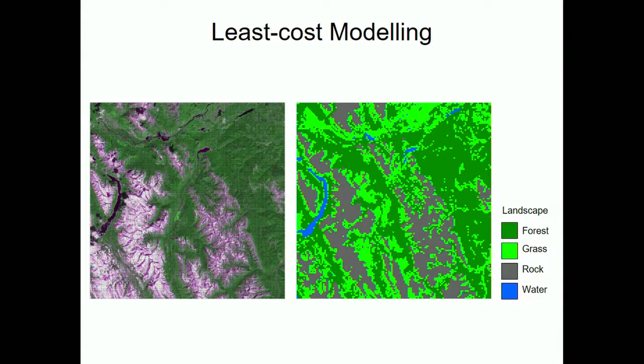We then decide how much it costs for movement across different landscape types. That cost could be a variety of things — the technique originated in transport geography where cost meant money — but in ecology we talk about ecological costs: energetic cost, calories burned, psychological aversion, or mortality cost — the possibility of being predated or killed — identifying which parts of the landscape are easier or harder to traverse.